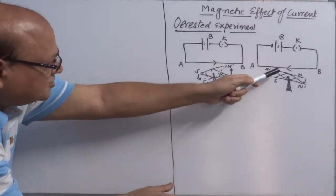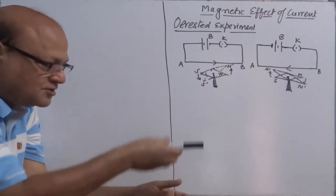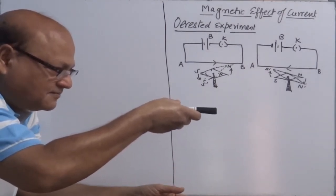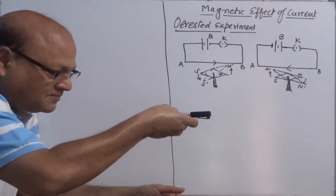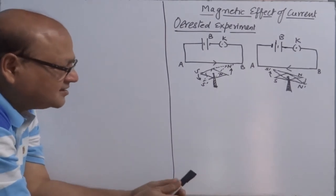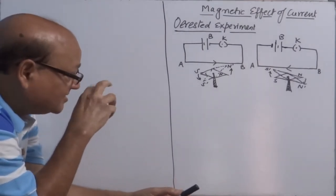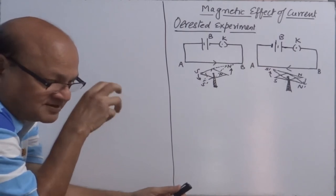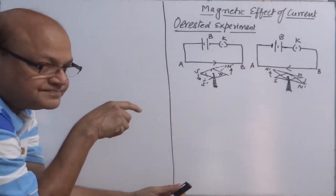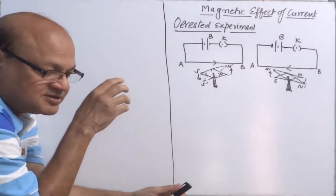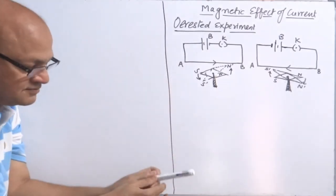Second observation: He changed the direction of current by reversing the polarity in the circuit, so current flows from B to A. Now the deflection is reversed — the north pole shifts in the opposite direction. So the deflection in the compass needle is also reversed. Third observation: He increased the strength of current in conductor AB. Once the strength of current is increased, the deflection in the compass needle is observed to be more.